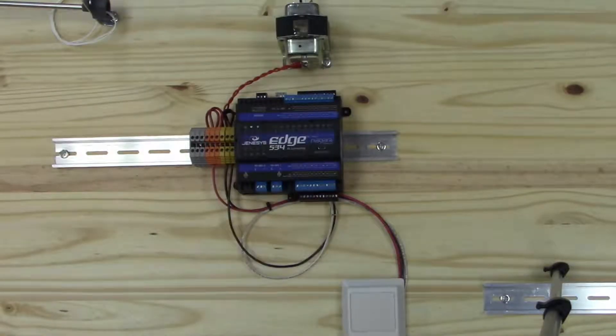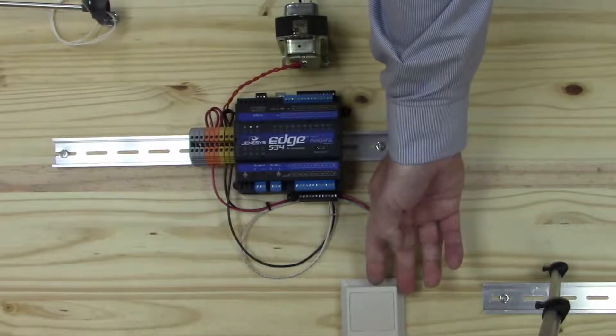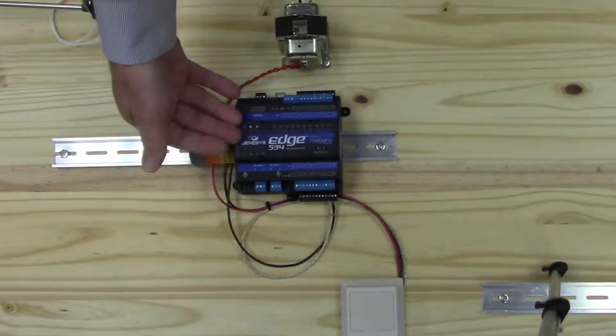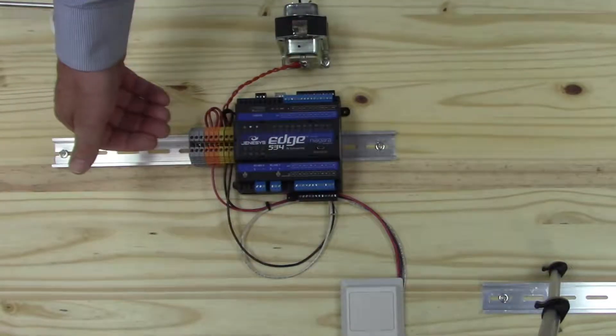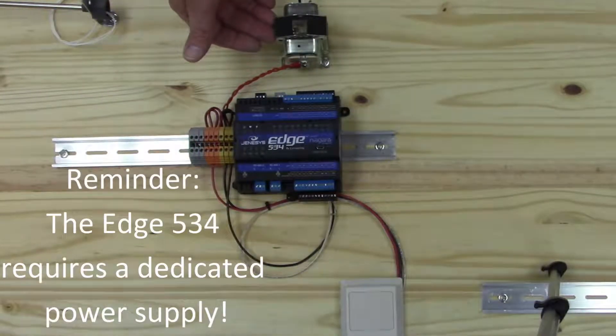Today we're going to demonstrate how to wire a 4 to 20 milliamp humidity sensor. In our case here we have the humidity sensor, we have the Edge 534 controller, we have a terminal block, and we have a general purpose power supply.